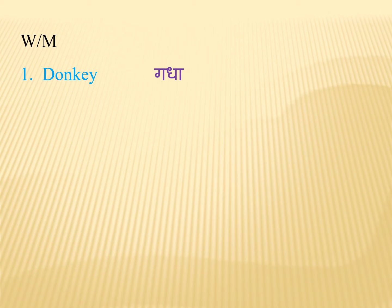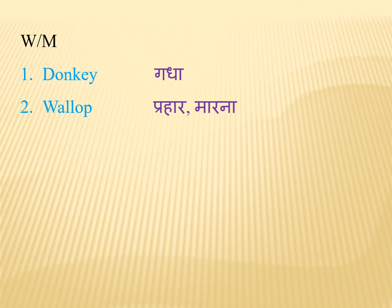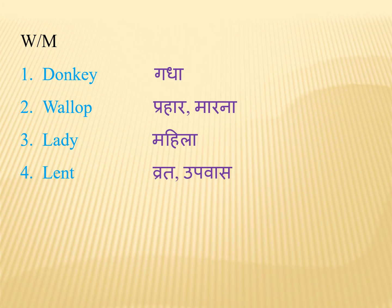First we will do word meanings. First word meaning: Donkey means Gada. Second is Bellu — Bellu means Parhaaryan Parma. Third is Lady — Lady means Mahila. Fourth is Lent — Lent means Bratya Par Upbaas.